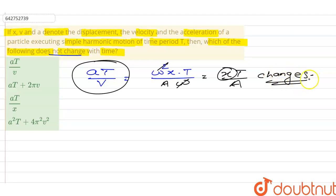Now if we talk about the second option, the second option is aT plus 2 pi v. So the value of acceleration is omega square x and the T is as it is, plus 2 pi. The value of v is a omega, so this expression also depends on time, so this is not correct.